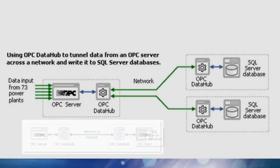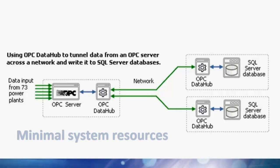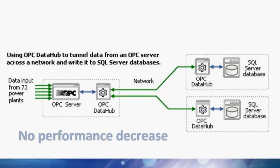With the Data Hub on the database servers, the last step was to configure the ODBC data logging. Every time a value changed at the remote power plants, a new row of data was written to the database within milliseconds. The customer also noted that in contrast to the other tunneling software, the Data Hub used almost no system resources and was able to handle 4.5 million data changes with no decrease in performance.